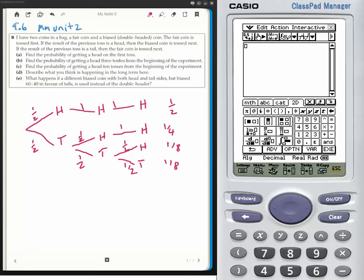The probability of getting a head on the first toss is part A. Getting a head on the first toss is a half. The probability of getting a head three tosses from the beginning of the experiment. This is the beginning of the experiment, this is the third. This is getting a head three tosses, in the third toss getting a head. So that's a half plus a quarter plus an eighth or seven eighths.